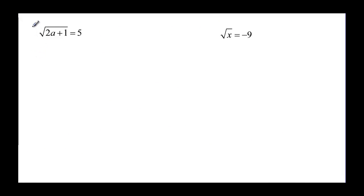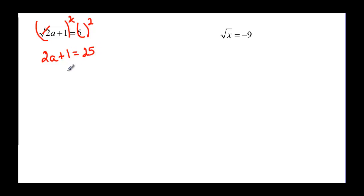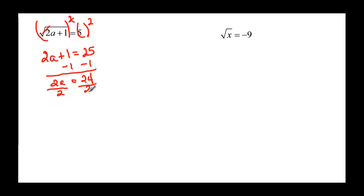Let's try again. Square both sides — the square cancels the square root and we have 2a plus 1 equal to 5 squared, or 25. Subtract 1 from both sides: 2a is going to be equal to 24. Divide by 2 and a is going to be equal to 12.